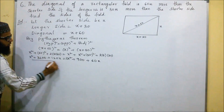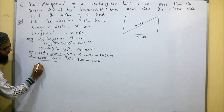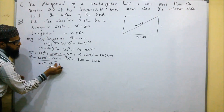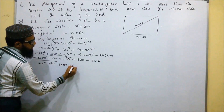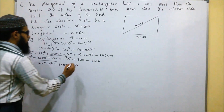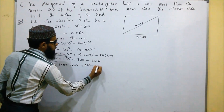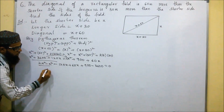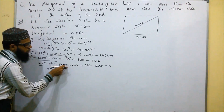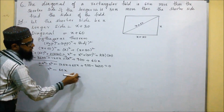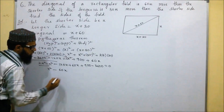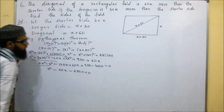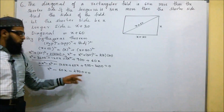Setting everything to one side, we get 2x² minus x² gives x². Then 120x minus 60x gives 60x. And 900 minus 3600 gives minus 2700. So we have x² minus 60x minus 2700 equals 0.